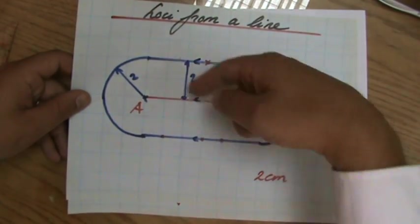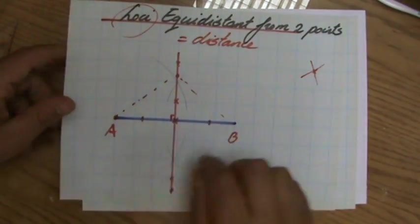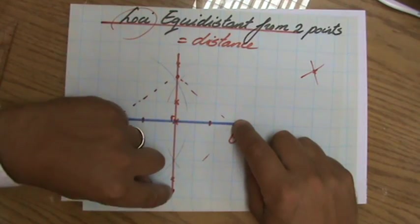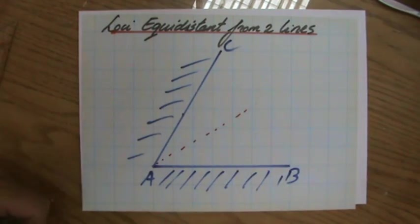But then at the vertices, semicircles, depending on the question. Equidistant from two points, in my previous video, the perpendicular bisector or line bisector, and equidistant from two lines, it is the angle bisector.